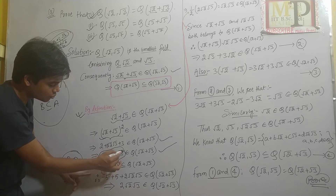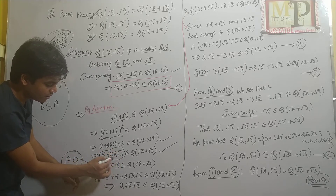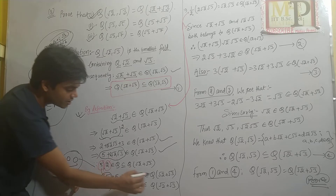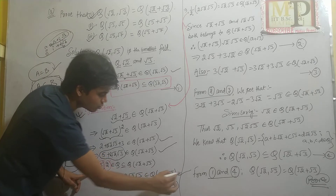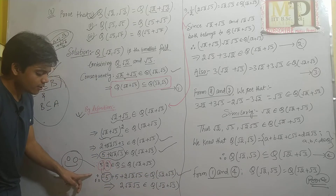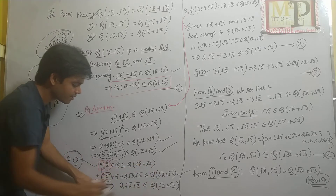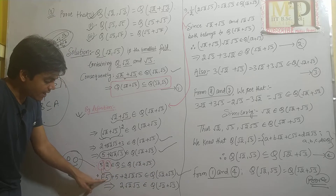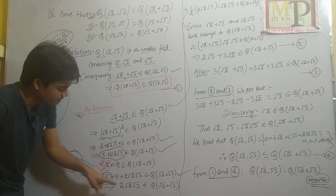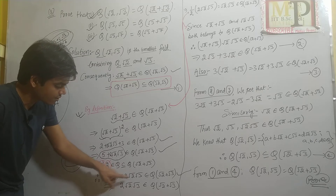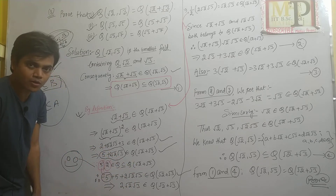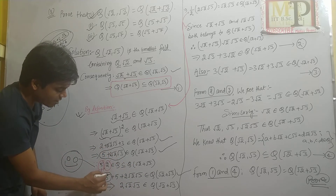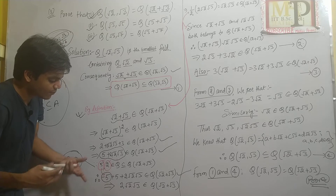हमारे पास 5 + 2√6 है। 5 को हटाने के लिए field axiom का सहारा लेंगे — 5 rational है, इसलिए −5 भी इस field के अंदर है। तो (5 + 2√6) + (−5) = 2√6 also belongs to Q(√2 + √3), by closure with respect to addition.